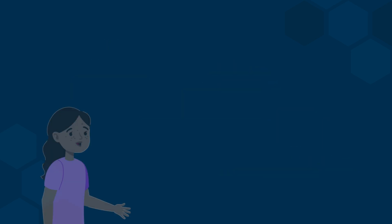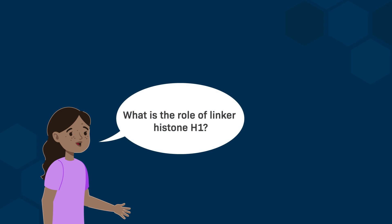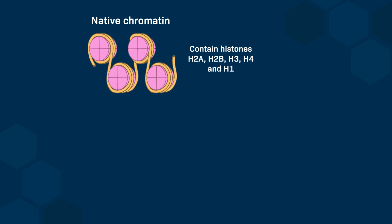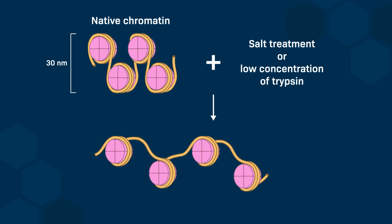Now that we know the roles of histones H2A, H2B, H3, and H4, what is the role of the linker histone H1? Experimental observations have shown that native chromatin that is isolated from the nucleus forms a 30 nm fiber. Post-isolation treatment with salt will change this to a much looser chromatin fiber that is about 10 nm thick.